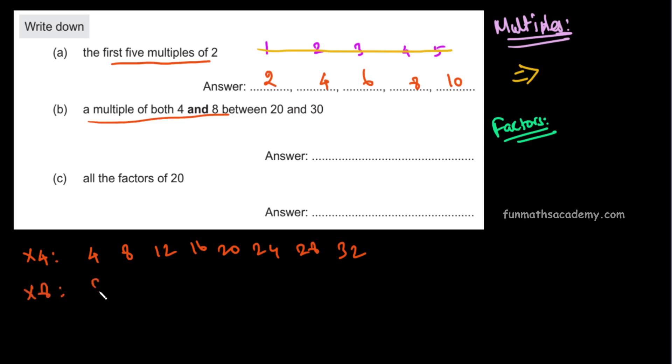Multiples of 8 are: 8, 16, 24, 32. We stop at 30. Between 20 and 30, there is one number that is a multiple of both 4 and 8. So the answer to the second question is 24.